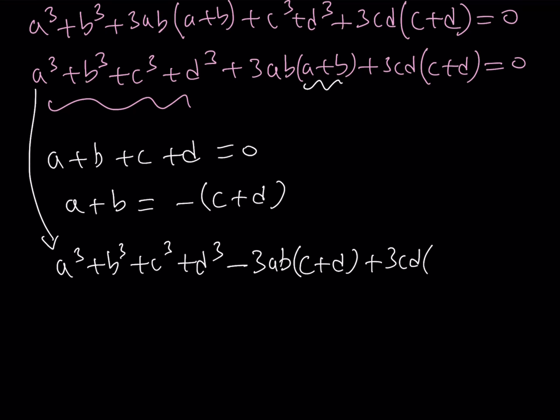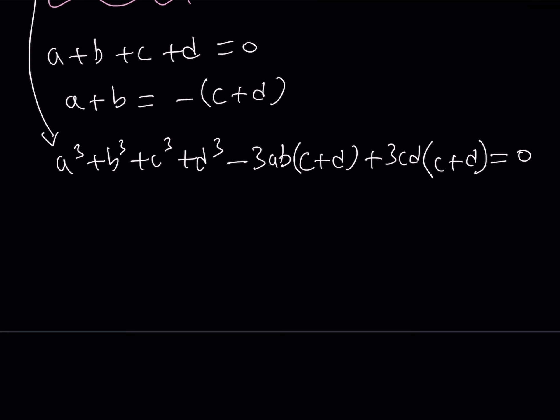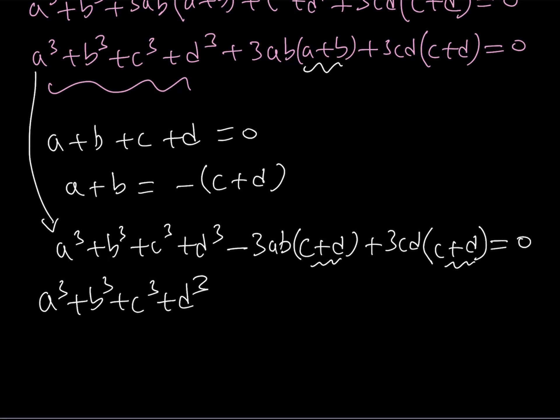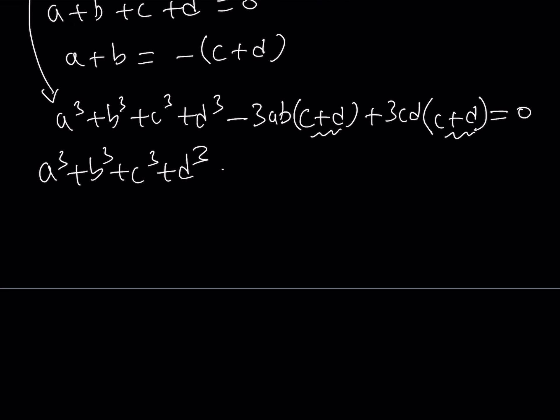And then, of course, the CD part is going to stay the same because my goal is to make this factorable. We have the sum of the cubes as is. Now, notice that I'm getting C plus D here and here. So that allows me to take out C plus D. You can put everything else on the other side, on the right-hand side. So you can write this as 3AB times C plus D minus 3CD times C plus D. For our purposes, this is going to be better.